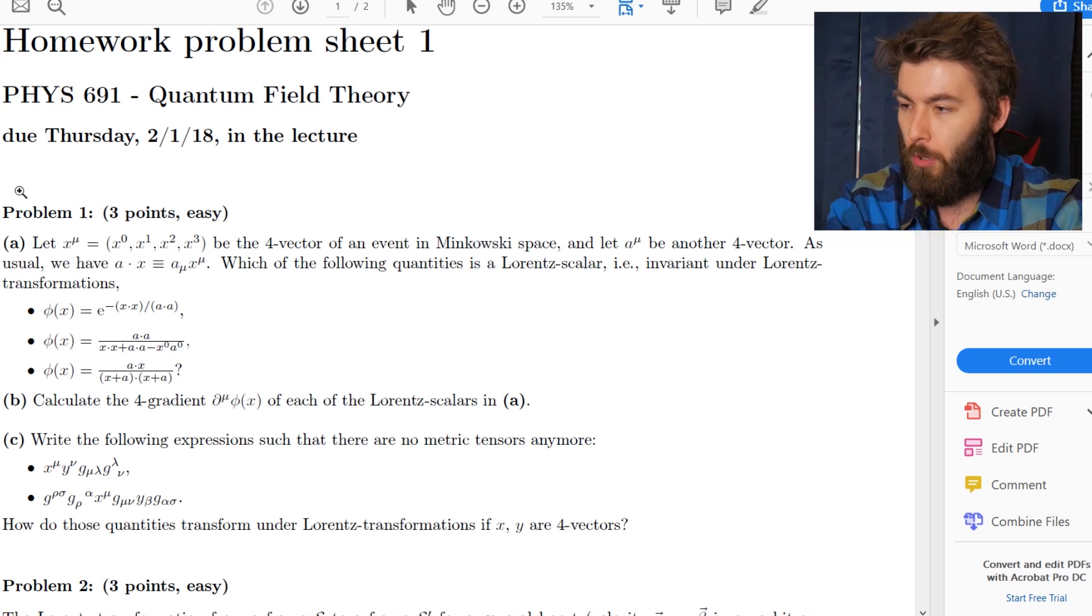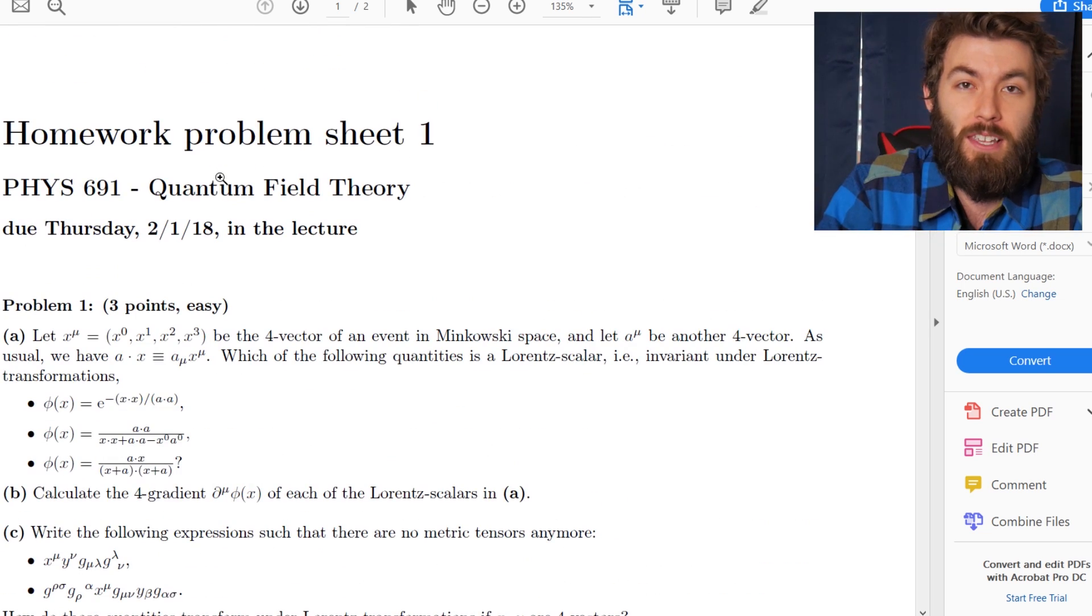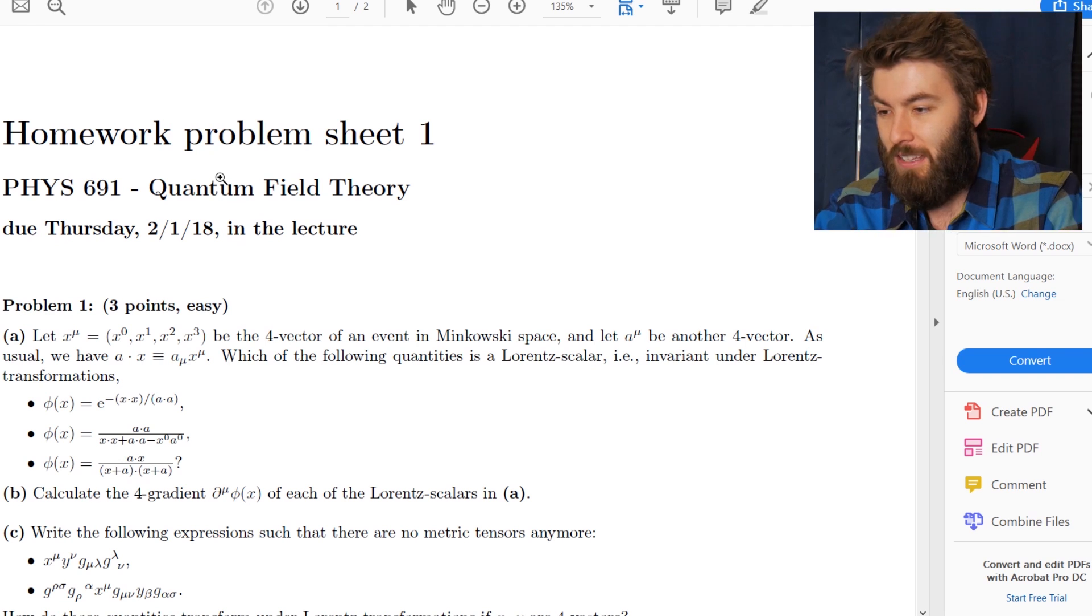So today I'm going to be going over the first homework set. I'm not going to be going over them verbatim after this homework because I don't want to spoil all the problems. This is just a really basic homework so it's okay for this one. Homework problem sheet one, this is basically one big problem set on special relativity tensors and four vectors.